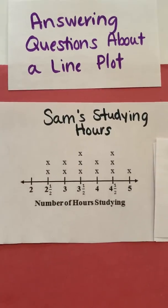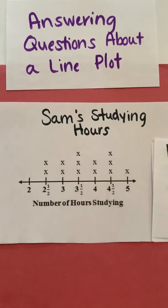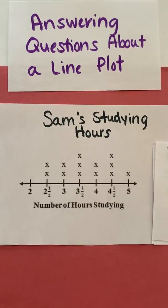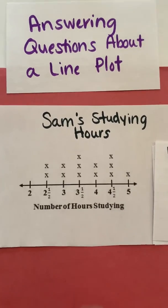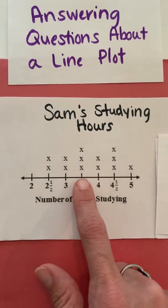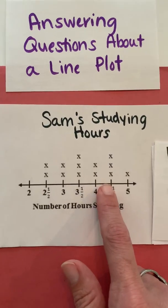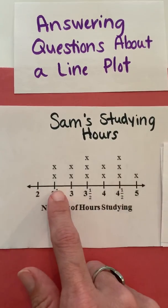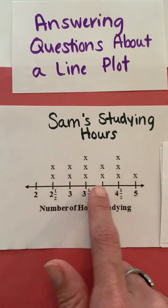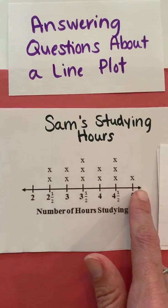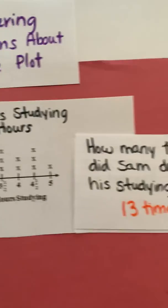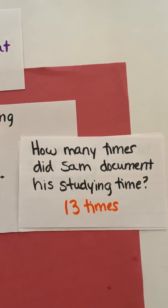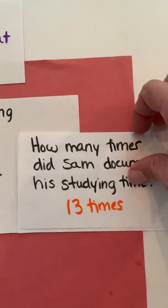Another way you could look at that is to use your skip counting skills. You could say 3, 6, and then count by 2's: 8, 10, 12, 13. You could use either of those strategies, or you may come up with another one on your own.